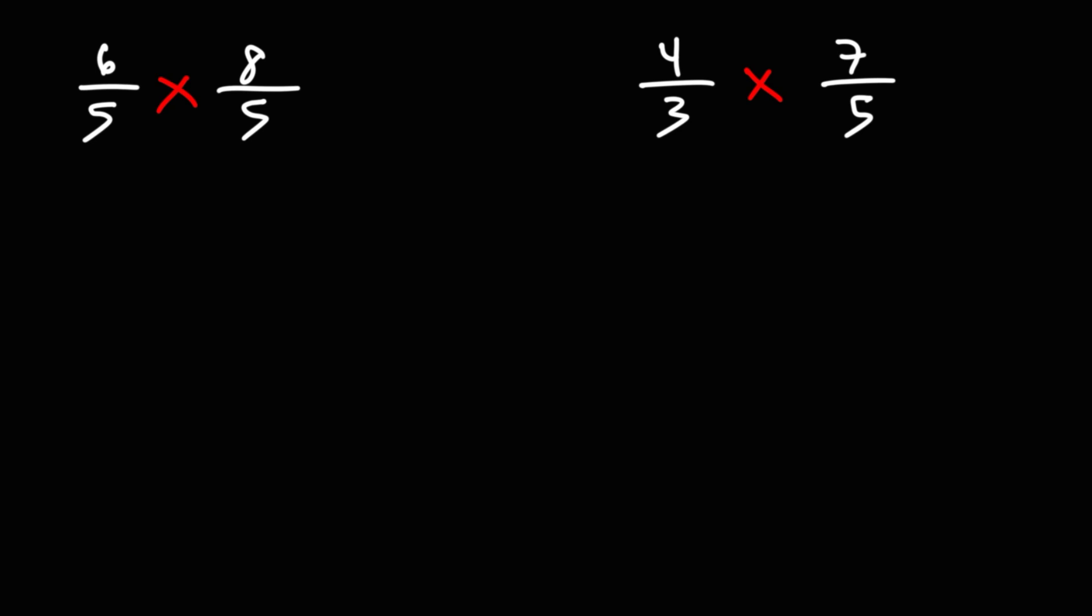To multiply two fractions, you need to simply multiply across. 6 times 8 is 48, 5 times 5 is 25. Now we can't simplify this fraction any further, so the answer is going to be 48 over 25 as an improper fraction.